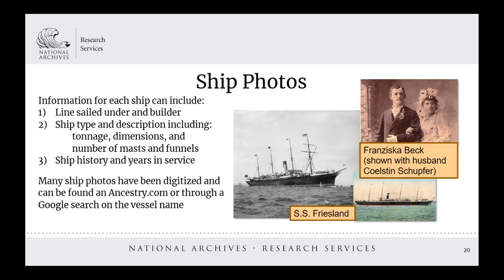If you are able to locate an immigrant ancestor on an arrival list, a good next step is to track down any existing ship photo. The photo may not give you specific insight into the individuals you're researching, but it provides a glimpse into what their travels into the U.S. were like. Many ship photos have been digitized and can be found on Ancestry.com or through a Google search on the vessel name. One colleague was researching her great-great-grandmother Francesca Beck's entry to the U.S. After discovering that Frances entered the U.S. on October 7, 1891 at New York aboard the SS Friesland, we were able to locate a number of photos on Ancestry.com and through a site dedicated to the Red Star Line that the ship was part of.